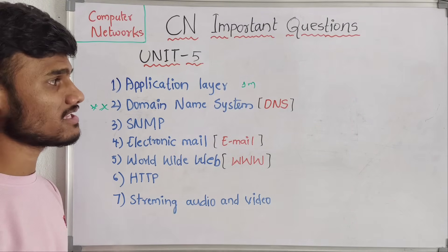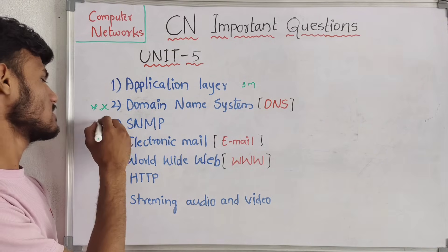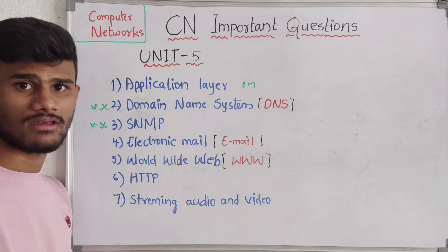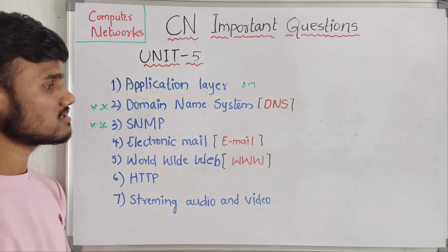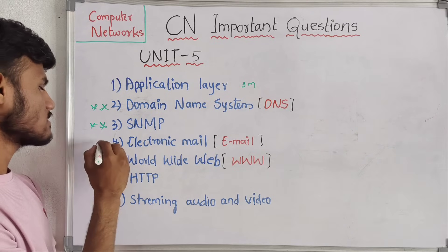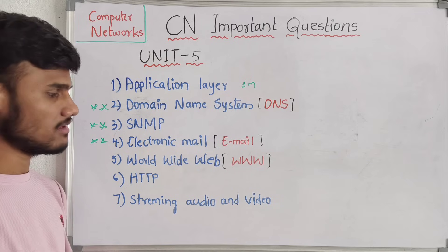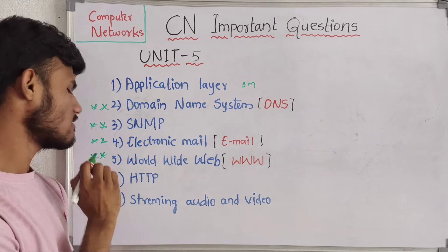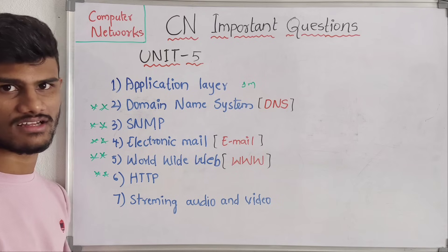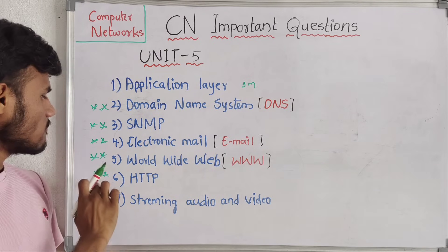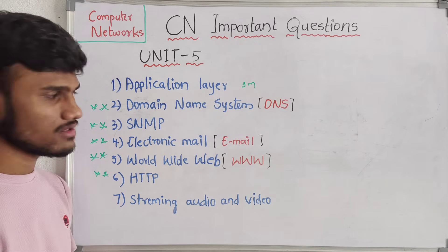Then next we have an important question — Domain Name System (DNS). DNS is a very very important and mostly repeated question. Then we have SNMP — Simple Network Management Protocol — which is also an important question. Then next we have electronic mail, which is nothing but email, and World Wide Web with HTTP.